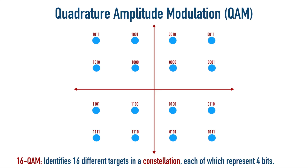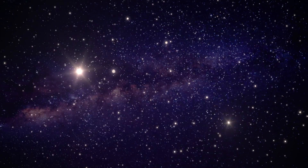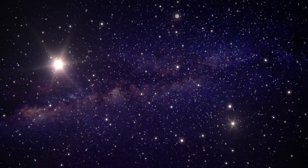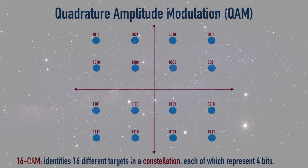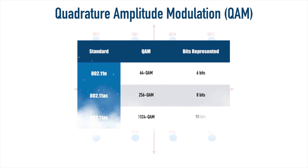16-QAM gives us 16 different targets in what's called a constellation. It's called a constellation because it starts to look sort of like a star field once you get more and more dots. But here, just to make it easy to visualize, we're using 16-QAM, and that represents four bits. Our Wi-Fi technologies take it a step further. Instead of just having 16 dots, 802.11n uses 64-QAM. How many bits does it take to give us 64 different possibilities? Six bits — so with a single waveform, we're communicating six bits.